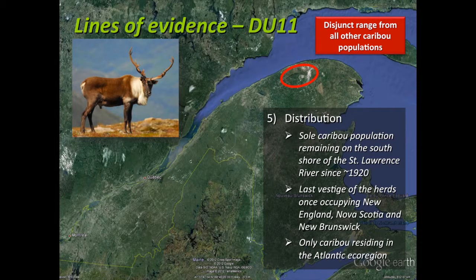Regarding distribution, you can see where Gaspésie National Park is located. There's a large natural barrier: the Saint Lawrence River. It's the sole current population remaining on the south shore of the Saint Lawrence River, isolated for almost a century now. It's also anthropogenically isolated due to an impressive amount of human-induced disturbance — cutovers, agriculture, cities, and roads — creating anthropogenic barriers that prevent exchange with other woodland caribou populations in Quebec.